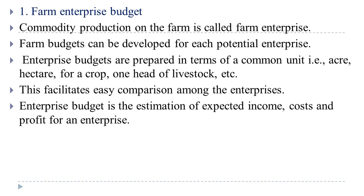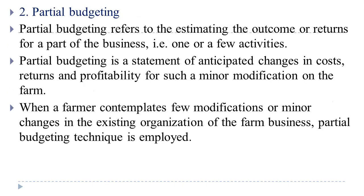The next type is partial budgeting. Partial budgeting refers to estimating the returns for part of the business — that is, one or a few activities. If we estimate the budget of any small part of the business or one or a few activities, we call that concept partial budgeting.